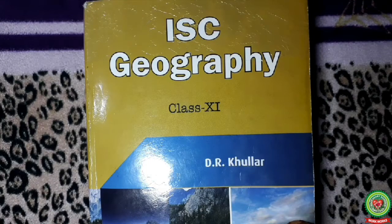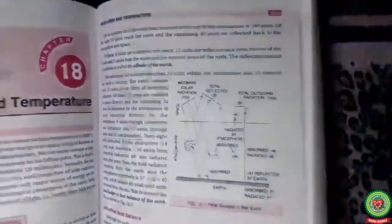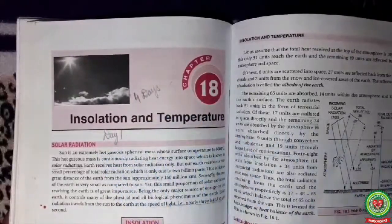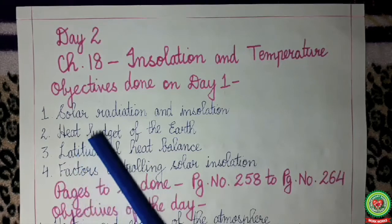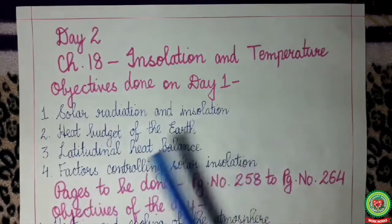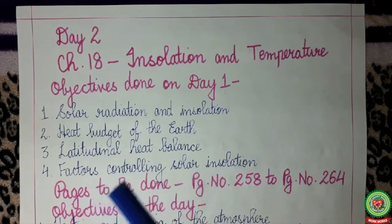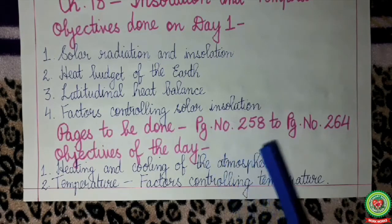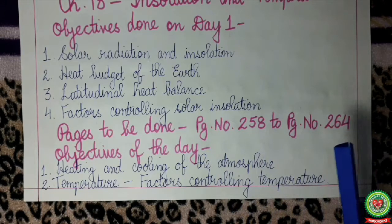Hello students, welcome to geography class. Today we will continue chapter 18: Insolation and Temperature. In the last class we studied about solar radiation and insolation, heat budget of the earth, latitudinal heat balance, and factors controlling solar insolation. Today we'll study from page number 258 to page number 264.